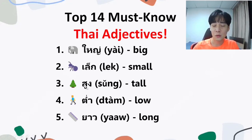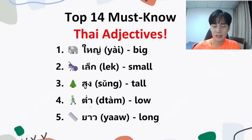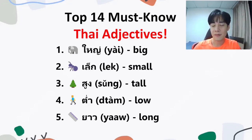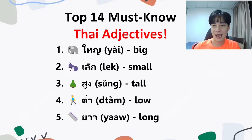Number 3, สูง — tall. Rising tone, สูง. Number 4, ต่ำ — low. Low tone, ต่ำ, which means low. Number 5, ยาว — long. Flat tone, ยาว. Long.